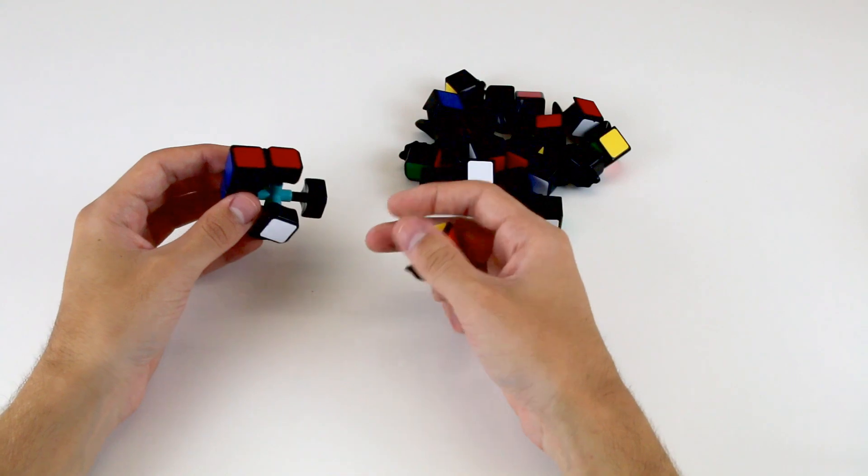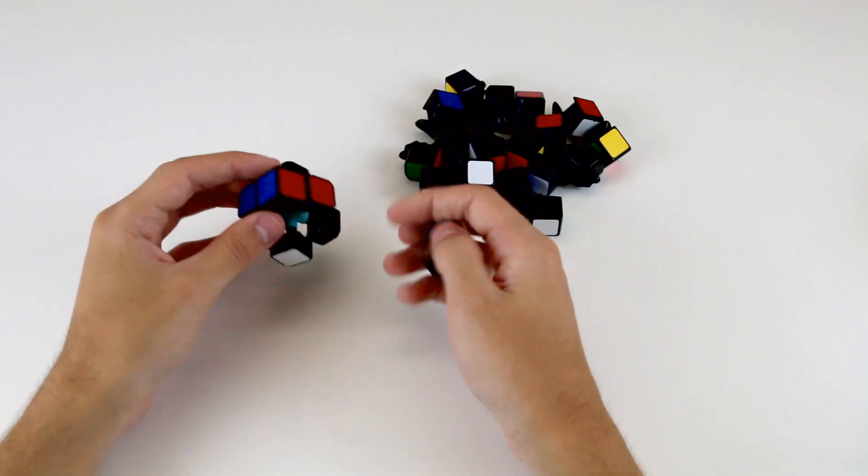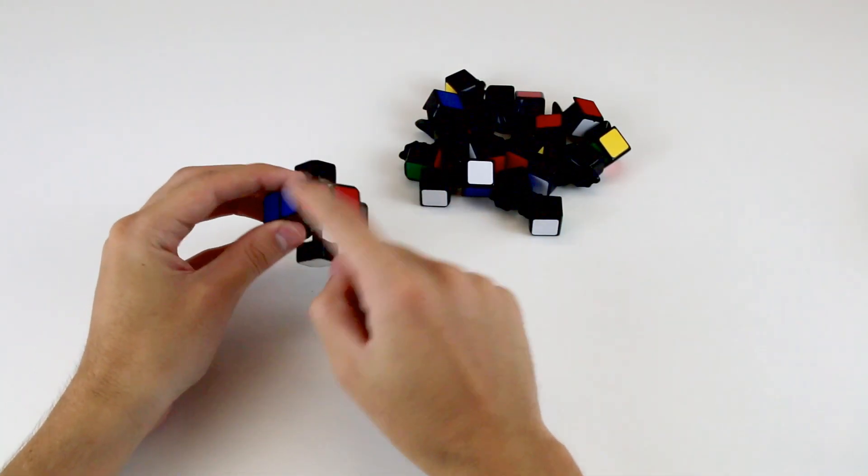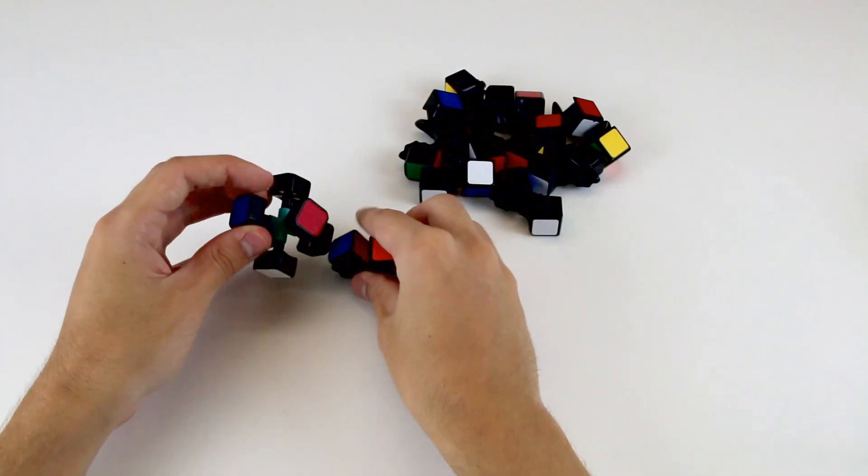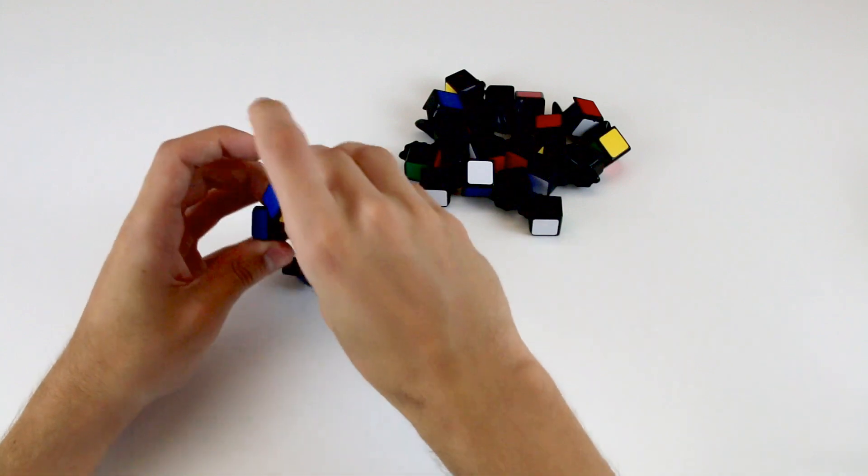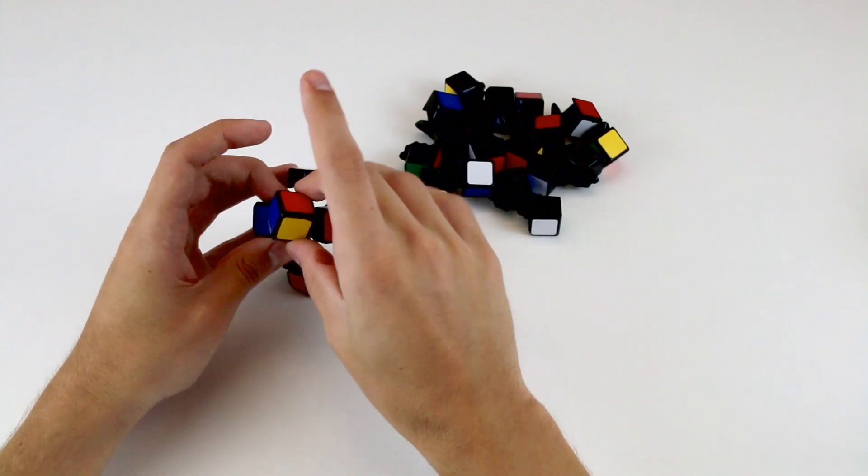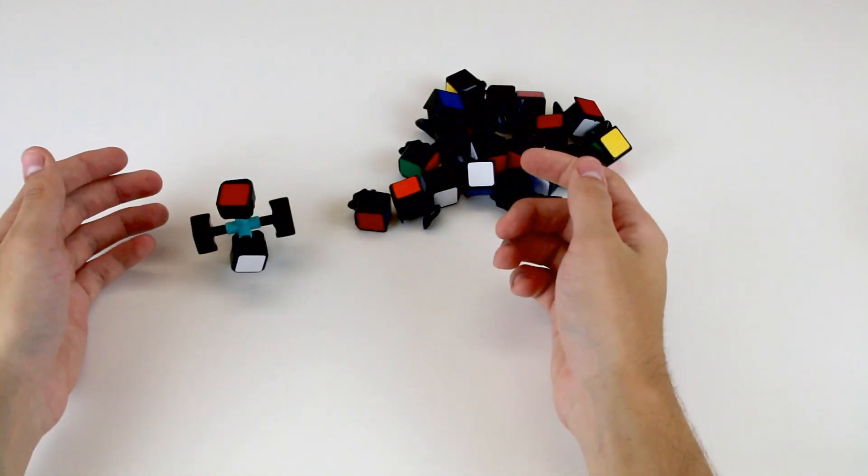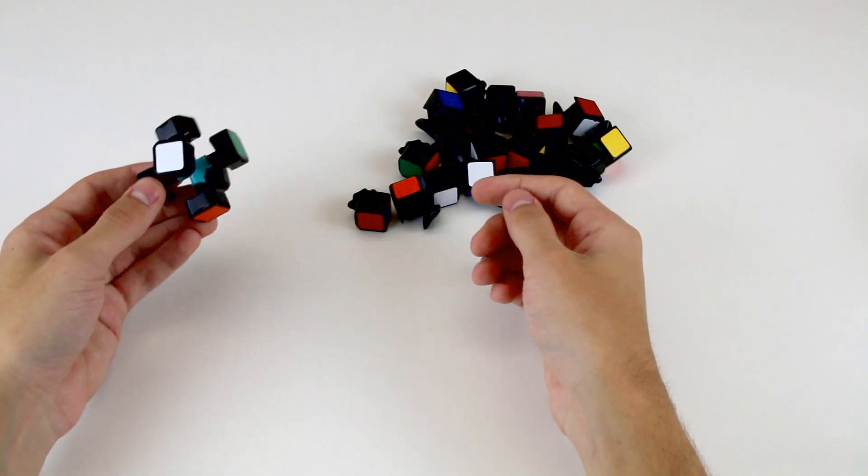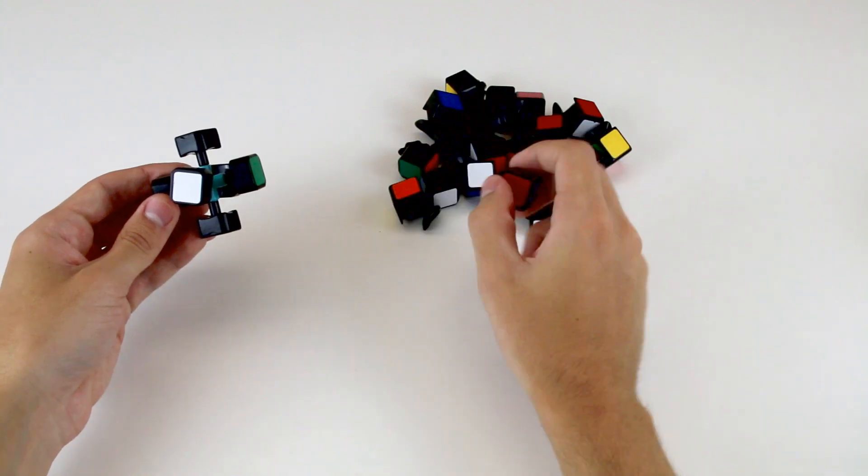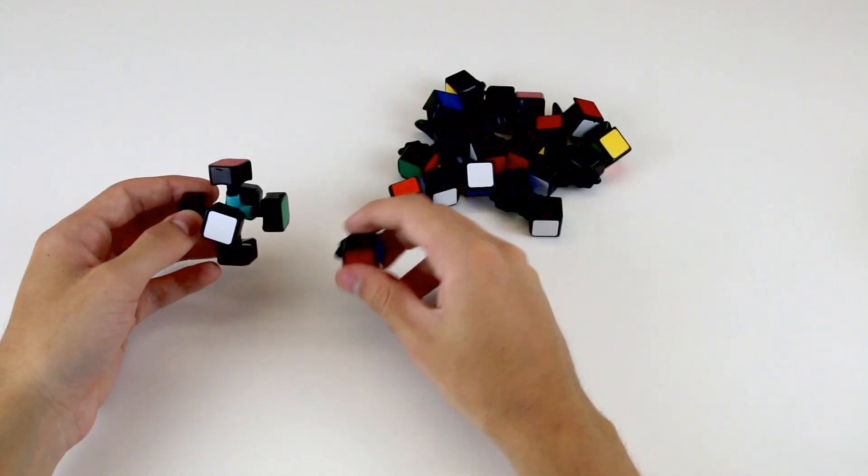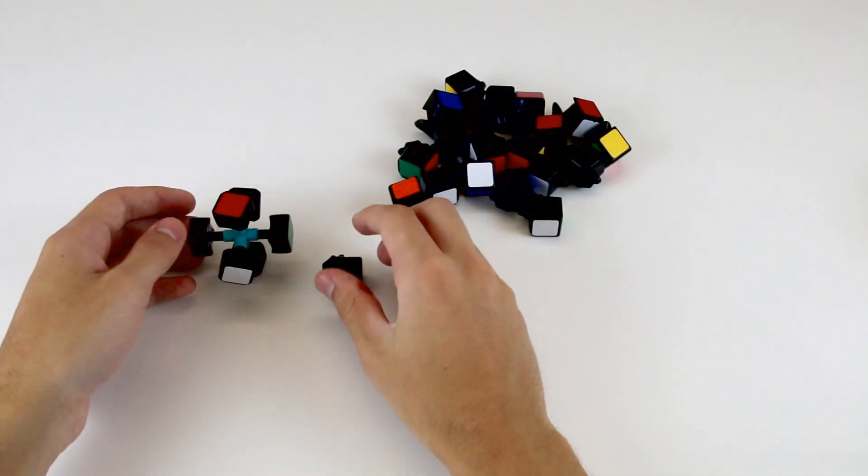It is important to know that different types of pieces on the cube cannot be interchanged. For example, an edge piece cannot end up where a center piece is located, nor can a corner piece take the place of an edge piece. It simply doesn't work. So because our centers are fixed, this means that the problem of solving a Rubik's Cube can be distilled to simply correctly positioning these twenty pieces, twelve edge pieces and eight corner pieces, which seems like a far less daunting task.